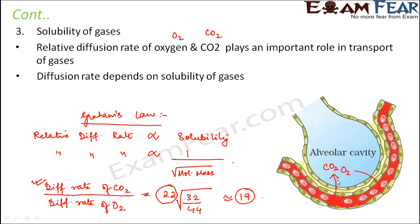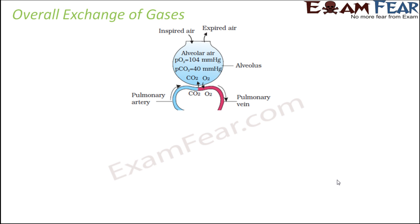This concept of exchange of gases holds true not only at the alveolar end but also between blood and the tissues. Between blood and tissues, there is also a difference in partial pressure of carbon dioxide and oxygen, and the membranes are suitable, so diffusion takes place there too. The inspired air in the alveolus has a partial pressure of oxygen of 104 and carbon dioxide of 40.